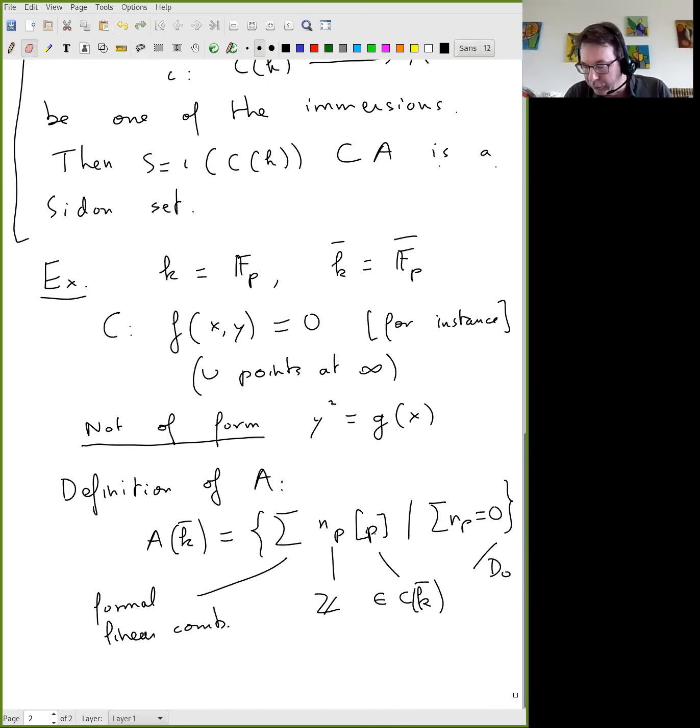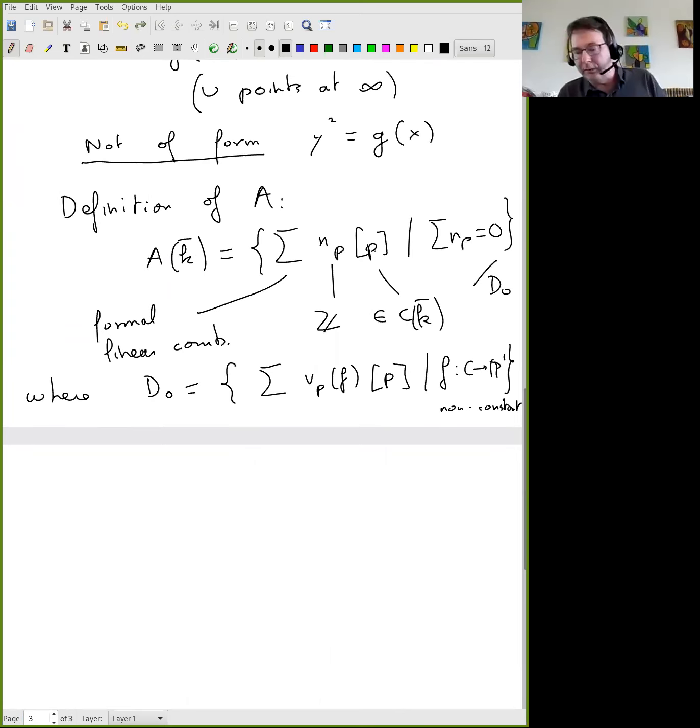So this is a formal combination, finite. The coefficients are in Z. The points are all the solutions of, let's say in that case of the equation F of X, Y is 0. Maybe I should call P the points to be precise. So all this where the sum of the n_Ps is 0. So these are so-called divisors of degree 0 modulo. So it's a formal abelian group. It's a free group with infinitely many generators. And then you take the quotient by the set of divisors. So these combinations, which are obtained by taking for every point, the valuation of a function.